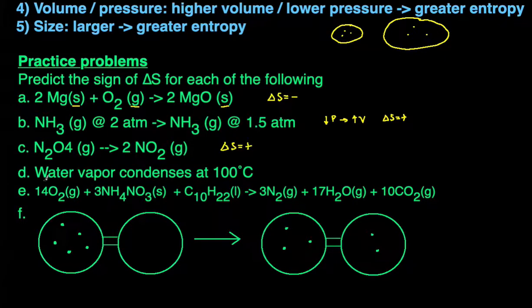You might also get questions where instead of giving you a reaction you're given a word statement. For example, water vapor condenses at 100 degrees Celsius. I'm just going to turn this into a reaction: H2O(g) → H2O(l). Here we just have a state change. We have a gas becoming liquid, something that's more chaotic becoming something less chaotic. So that means delta S will be negative. There was a decrease in entropy.